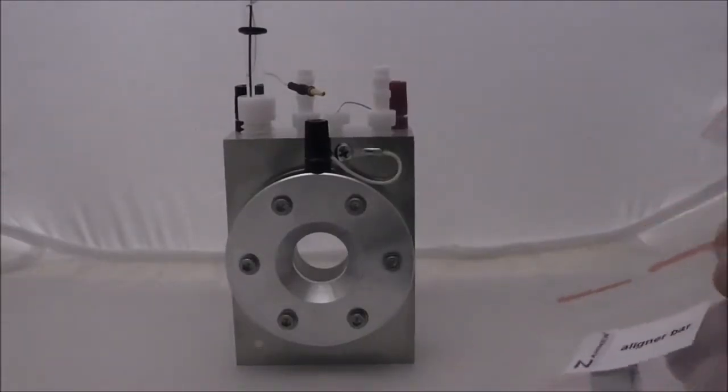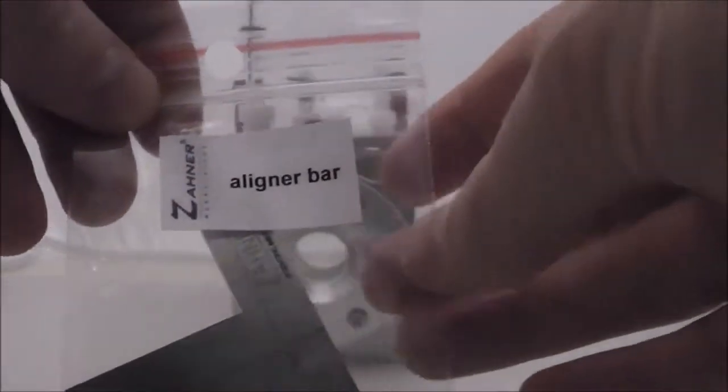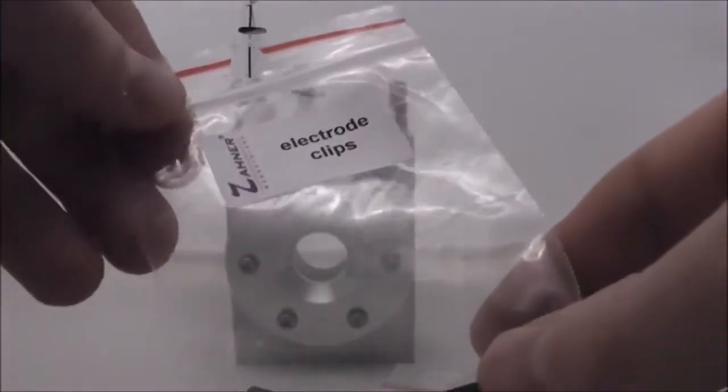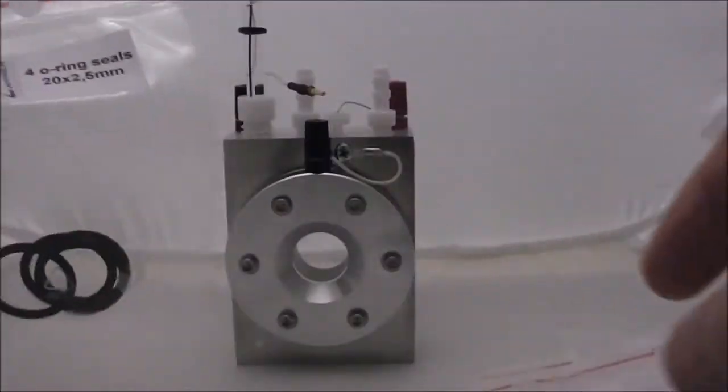The nice thing about Zana is when they ship you the PEC2 cell, they ship you a whole host of accessories, including alignment bars if you need them, alligator or crocodile clips, and extra seals.